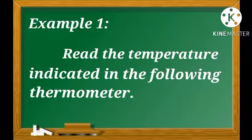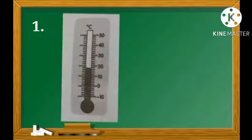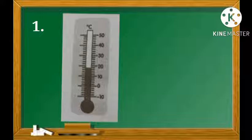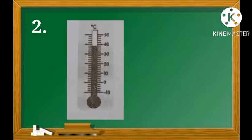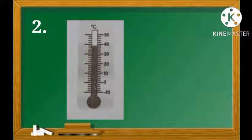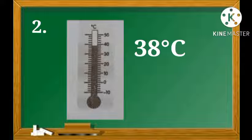Now let's consider the following examples. Example number 1: Read the temperature indicated in the following thermometers. Number 1: What is the temperature reading in this thermometer? If your answer is 17.5 degrees Celsius, you're correct. And number 2: if 38 degrees Celsius is your answer, then you're right.